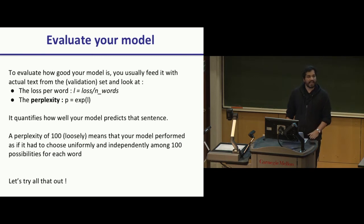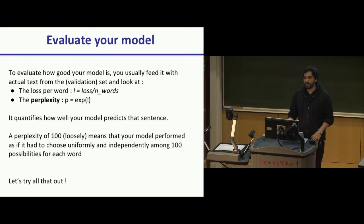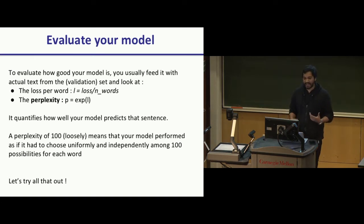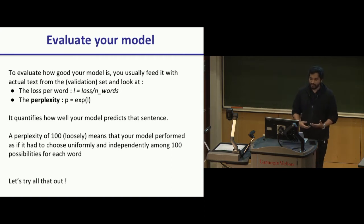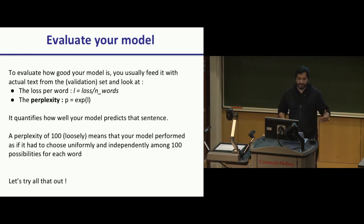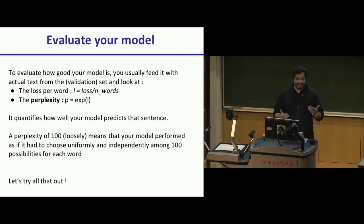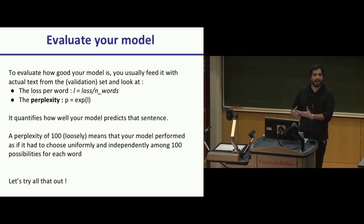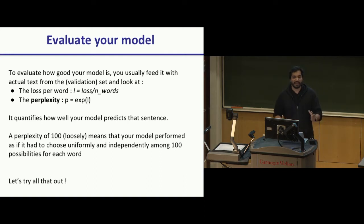A super useful way of evaluating how good your language model is performing is a metric known as perplexity. You calculate your cross-entropy loss per word and then take the exponent of that. It quantifies how well your model is predicting a given sentence. Loosely speaking, if your model ends up with a perplexity of 100 on your test set, that's equivalent to your model having to pick between 100 words for every correct label.